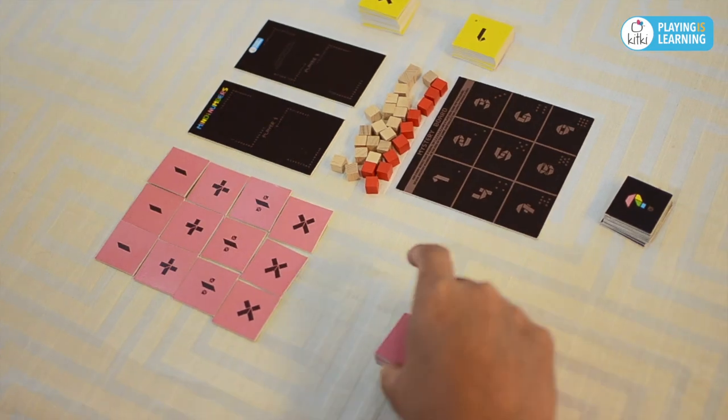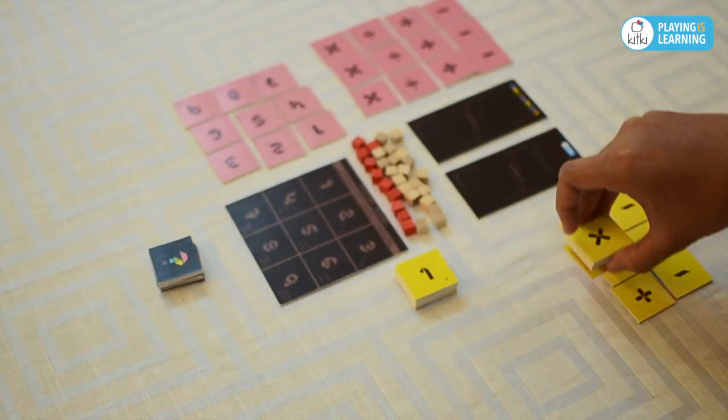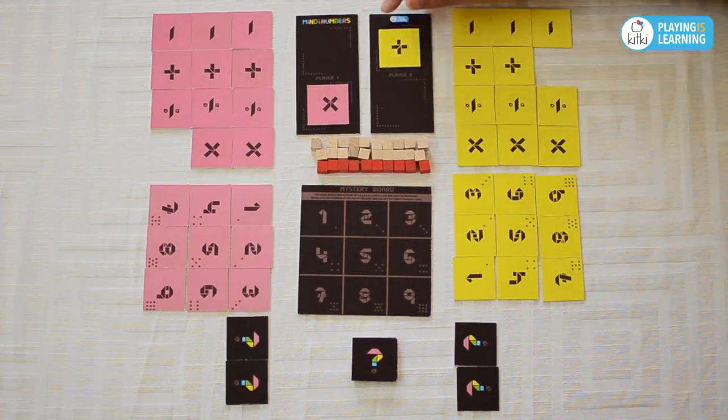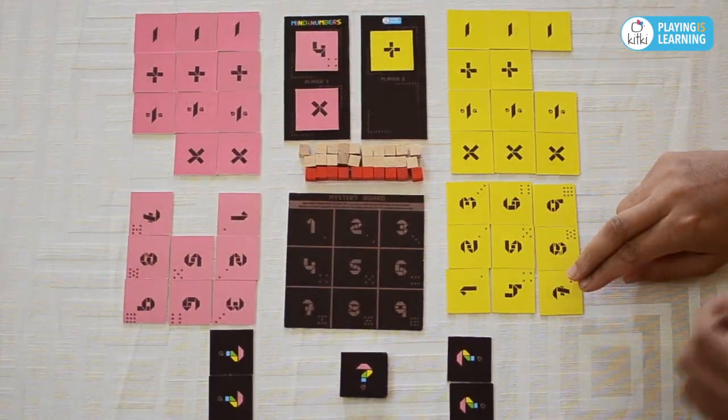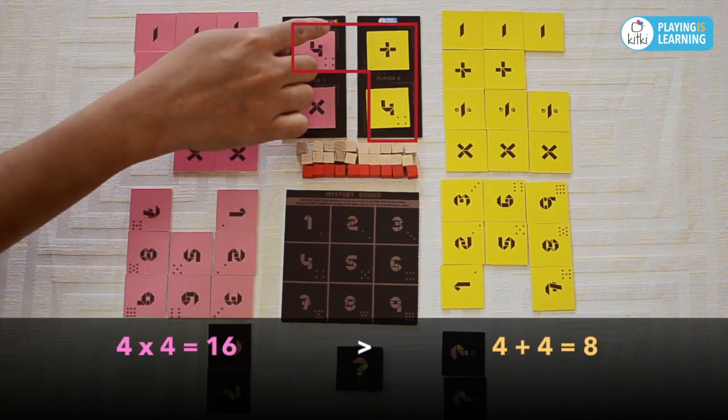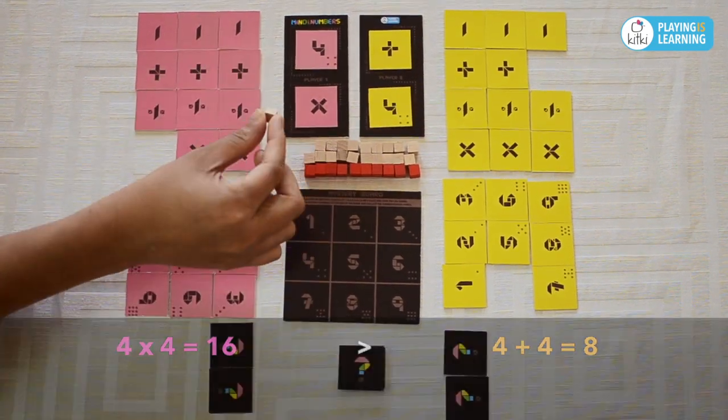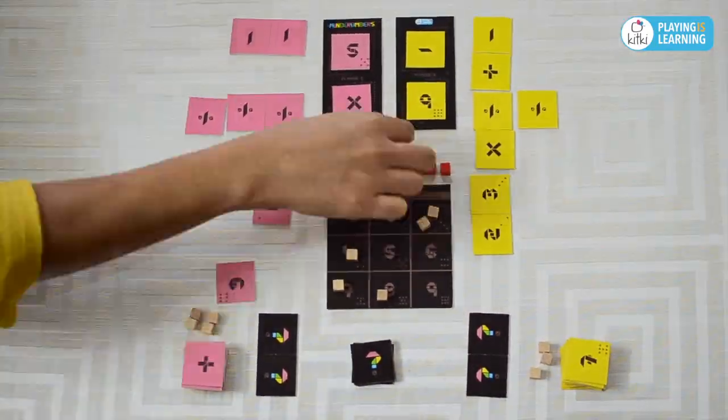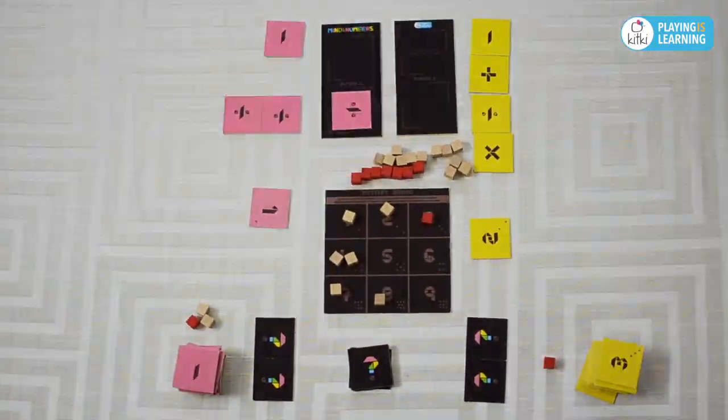Each player gets nine numbers and twelve symbols. The game is played over nine rounds, and in each round players place one symbol and one number each. Based on the tiles used, two simple calculations are made and the player with higher result earns a point. As each tile may be used only once, it is imperative for players to plan when to use which number and symbol.